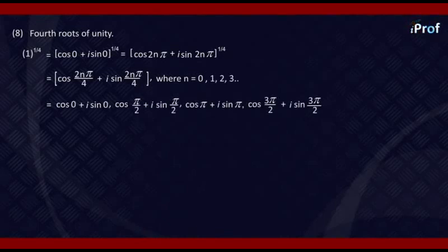Putting the values: when n = 0, we get 1; when n = 1, we get iota; when n = 2, we get -1; when n = 3, we get -iota. Hence, the fourth roots of unity are ±1 and ±iota.